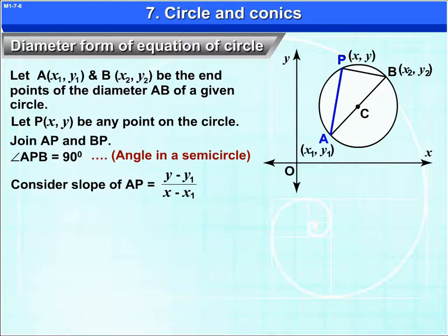Consider slope of AP is equal to (y - y₁)/(x - x₁) and slope of BP is equal to (y - y₂)/(x - x₂).